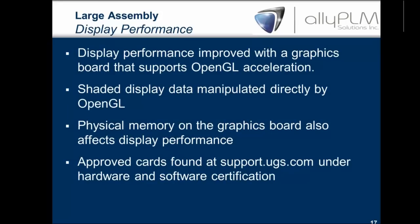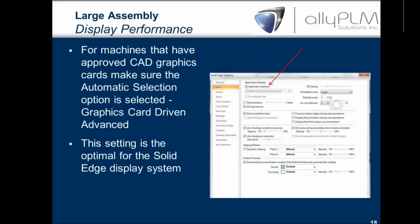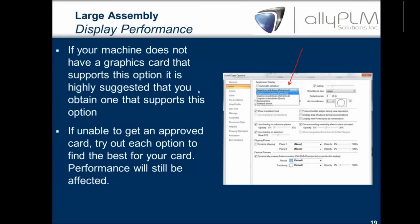For machines with approved graphics cards, make sure automatic selection is selected — that will give you graphics card driven advanced mode, which is the optimal setting for Solid Edge. If you're stuck without an approved graphics card and cannot get one, drop down the box and try the different options. I actually got an HP computer at Best Buy on Black Friday — 64-bit with 6GB of RAM and a gaming card. I went through and selected the different options, and the one that worked best for me was graphics card driven Direct 3D. Play with the options to see which works best if you don't have an approved card.